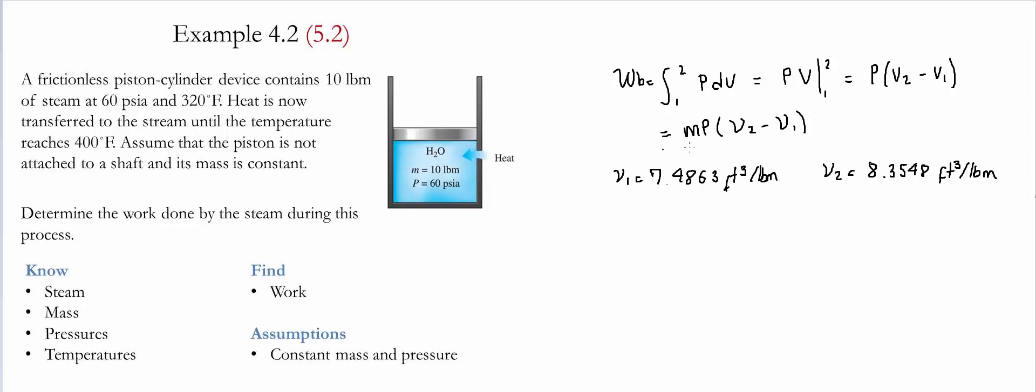Now we take all those values and substitute them into this equation. Boundary work then is equal to the mass which is given to be 10 pound mass.